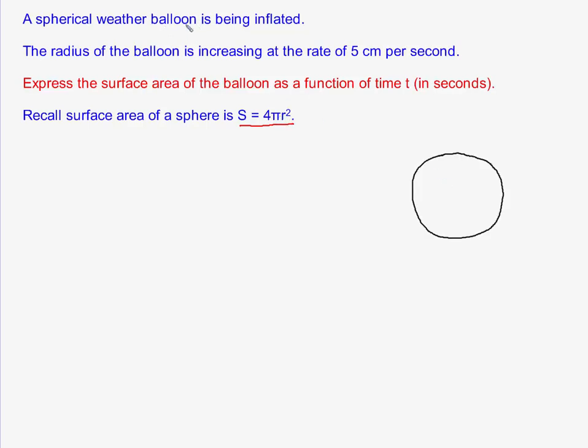Since we're given that the weather balloon is spherical, that means we're dealing with a sphere, or you could think of it as the shape of a basketball. The distance across the entire basketball would be the diameter. The r, however, in our formula is half of the diameter. That's called the radius, so that's this piece here. And as the radius gets bigger, your ball gets bigger, and that makes the surface area of the ball bigger.